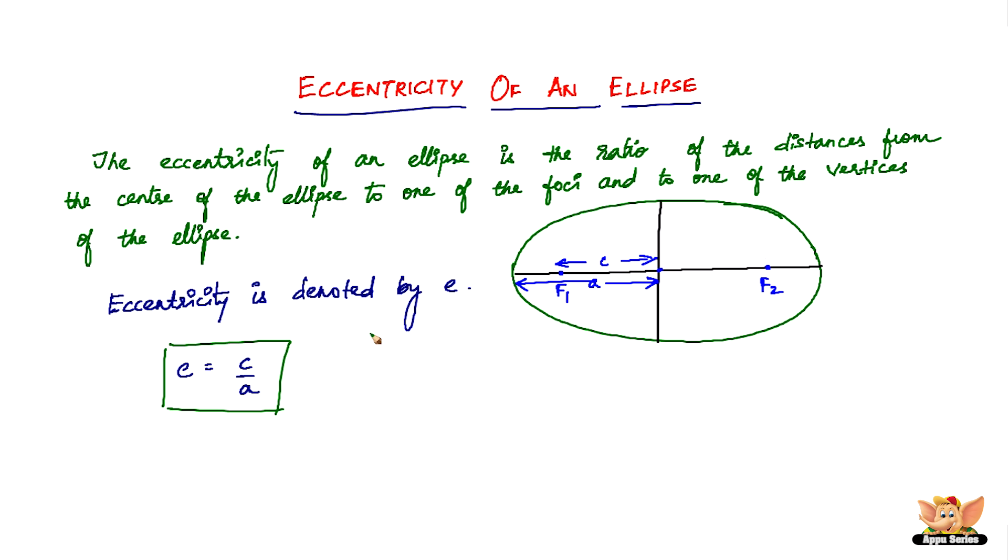c is the distance of one of the foci from the center, and a is the semi-major axis length. So it is the ratio of c to a, and this ratio is called the eccentricity of an ellipse.